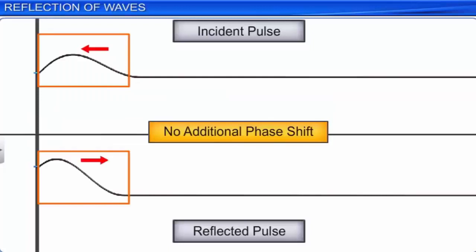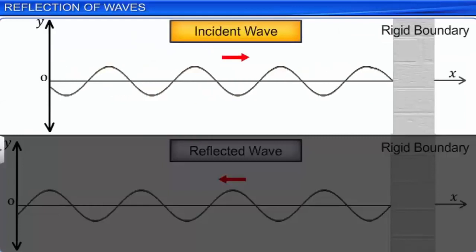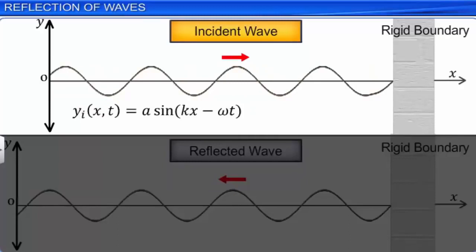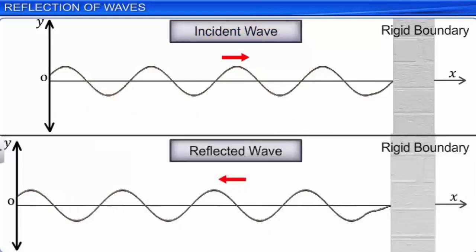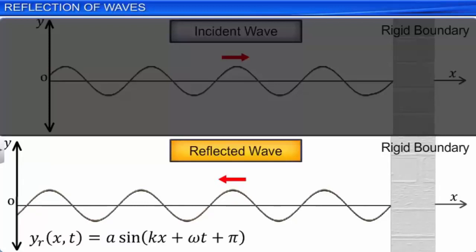Let us express these observations mathematically. The incident wave is yi(x, t) = a sin(kx − ωt). The reflected wave from a rigid boundary is a sin(kx + ωt + π) = −a sin(kx + ωt). For reflection at an open boundary, the reflected wave is yi(x, t) = a sin(kx + ωt). When a wave is incident obliquely on the boundary between two different media, part is reflected and part is transmitted. This transmitted wave is called the refracted wave. Refraction of waves follows Snell's laws of refraction, as in the case of a beam of light.